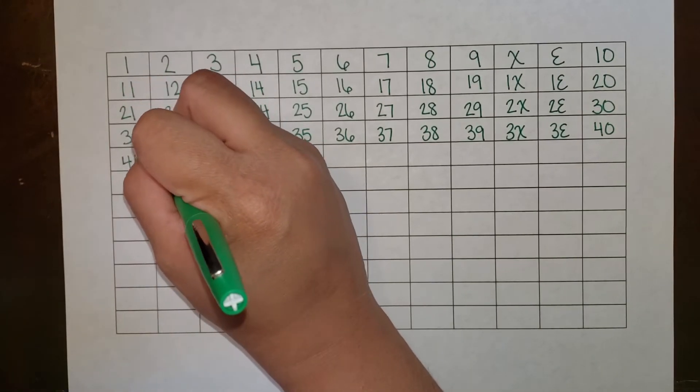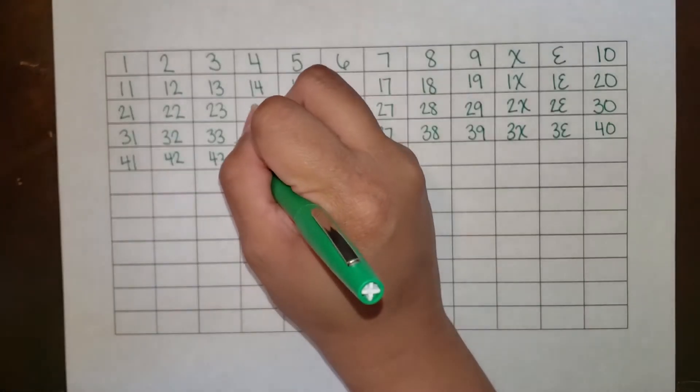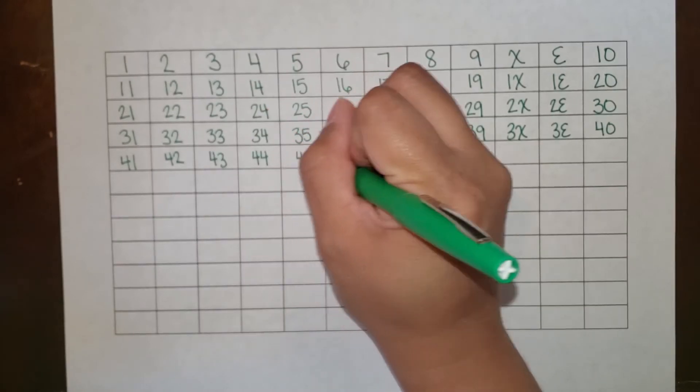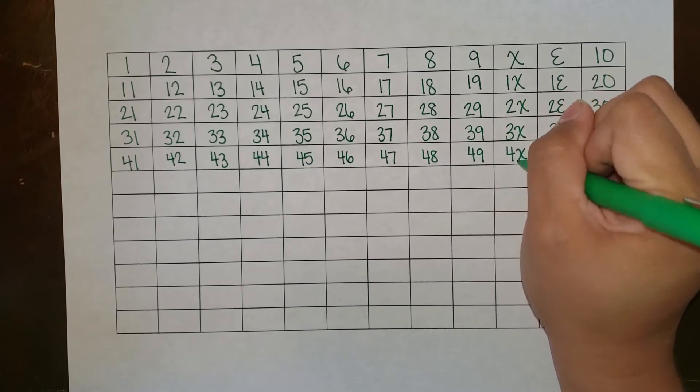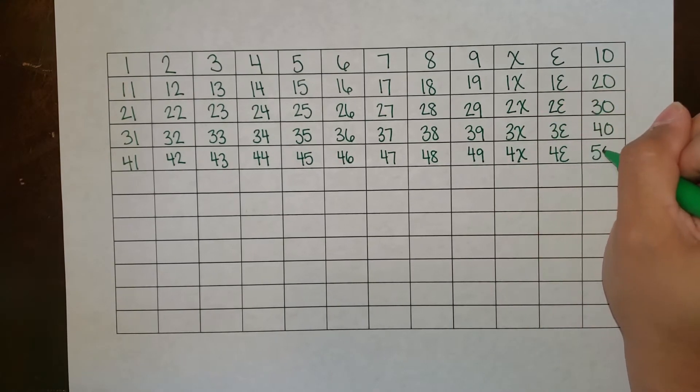4 doe 1, 4 doe 2, 4 doe 3, 4 doe 4, 4 doe 5, 4 doe 6, 4 doe 7, 4 doe 8, 4 doe 9, 4 doe deck, 4 doe L, 5 doe.